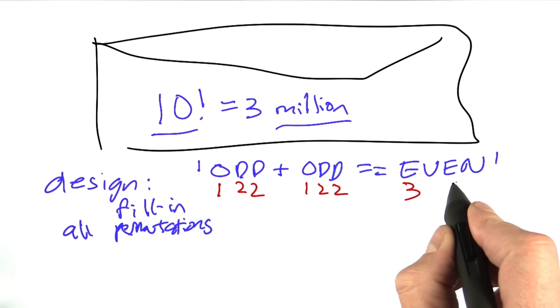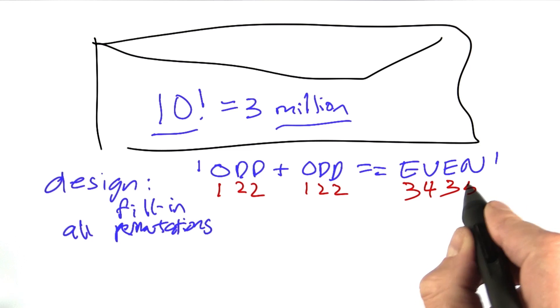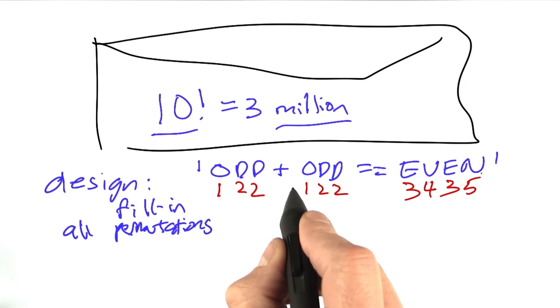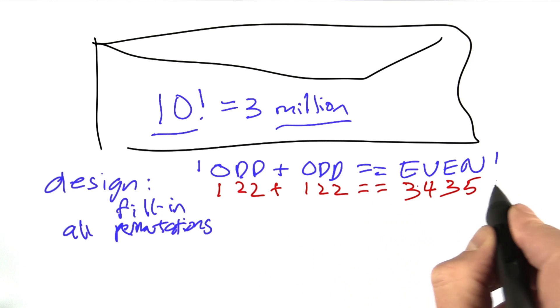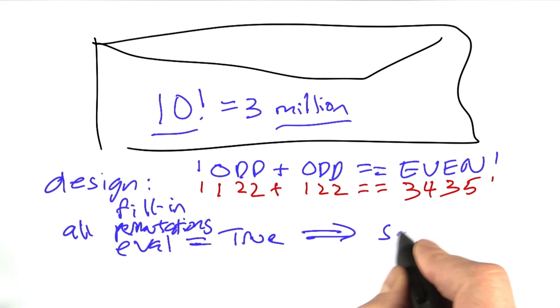And a 3 for the E's, and a 4 for the V's, and a 5 for the N's. And otherwise, just copy the equation, and then evaluate that, and check if that's equal to true. And if it is, then we have a solution.